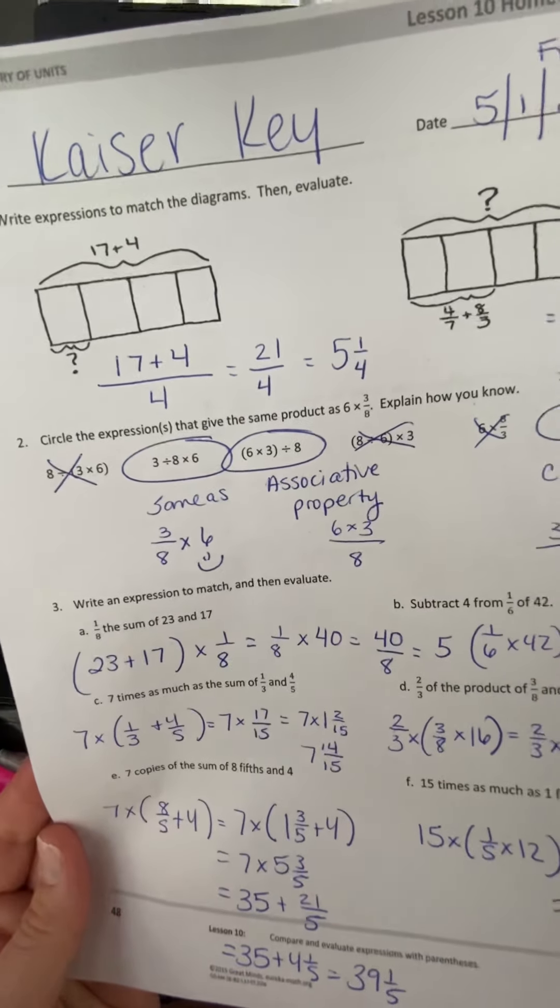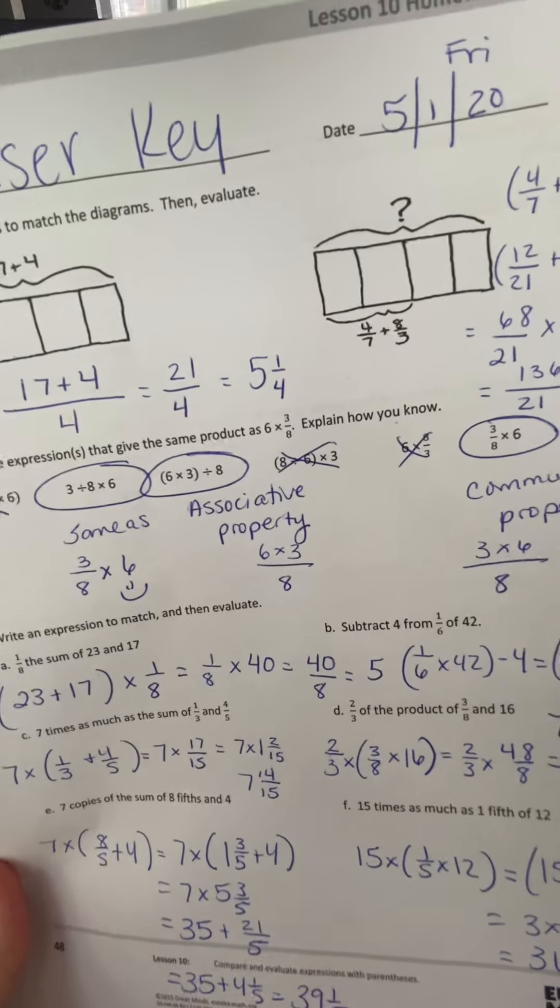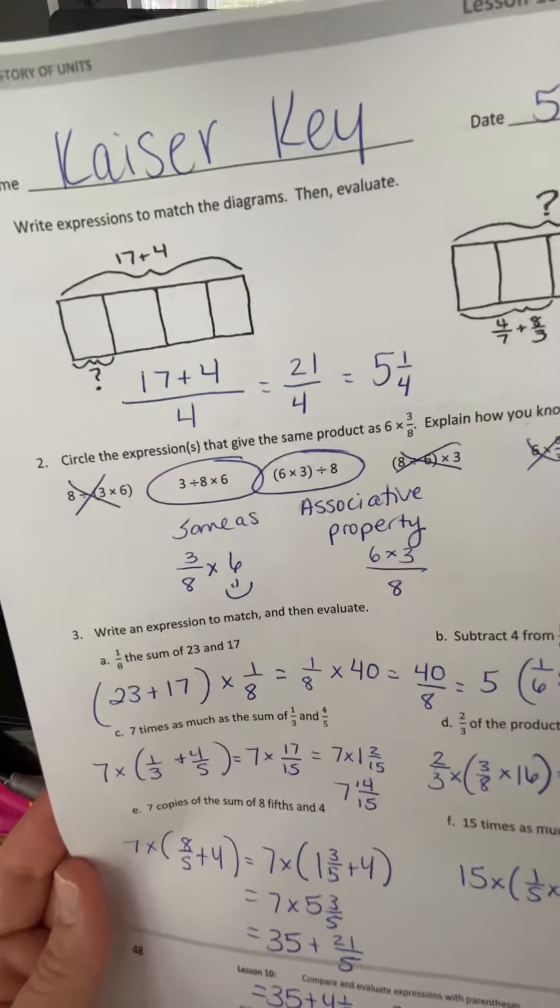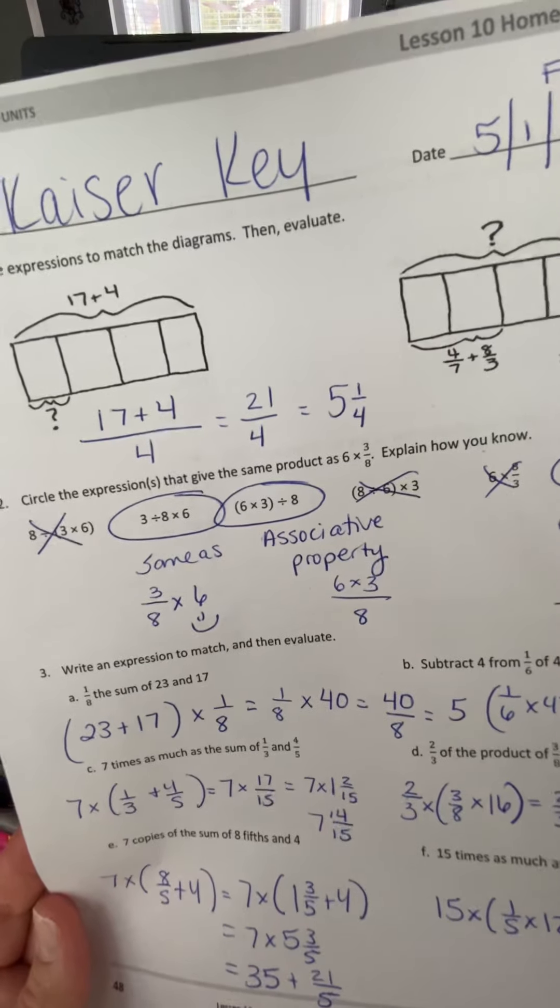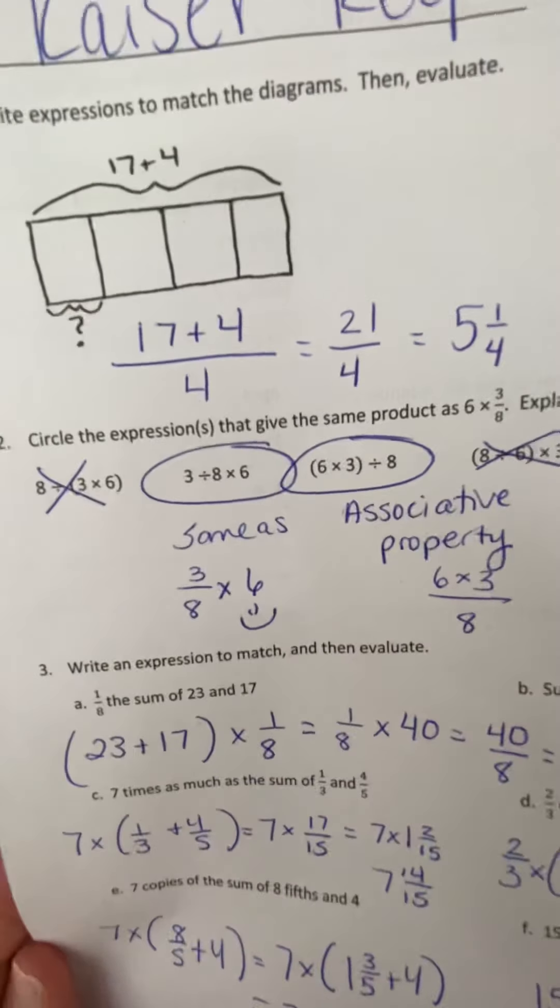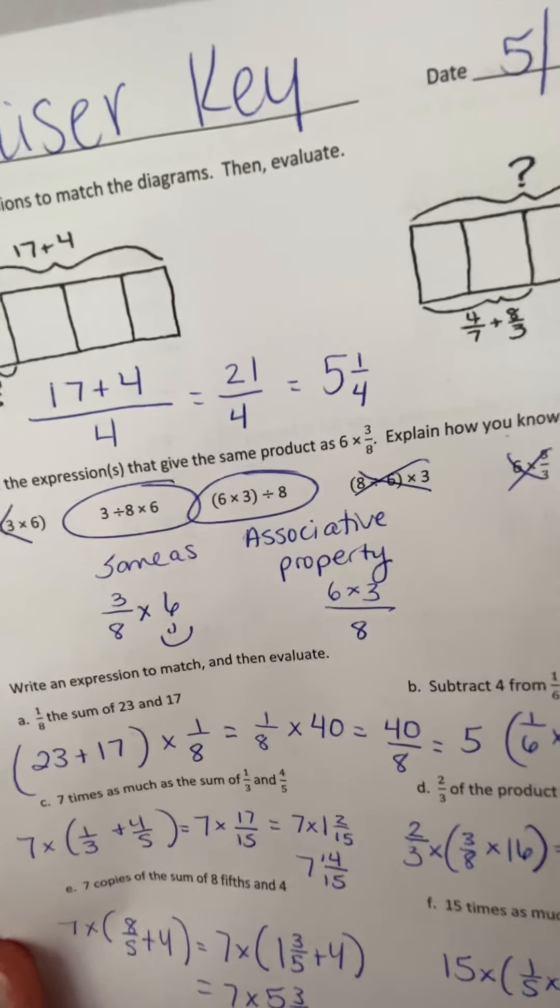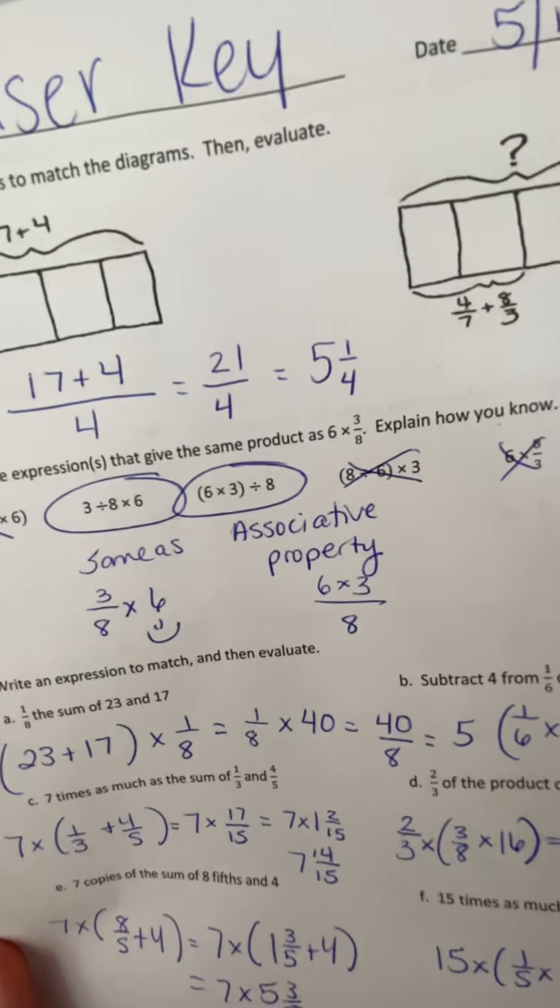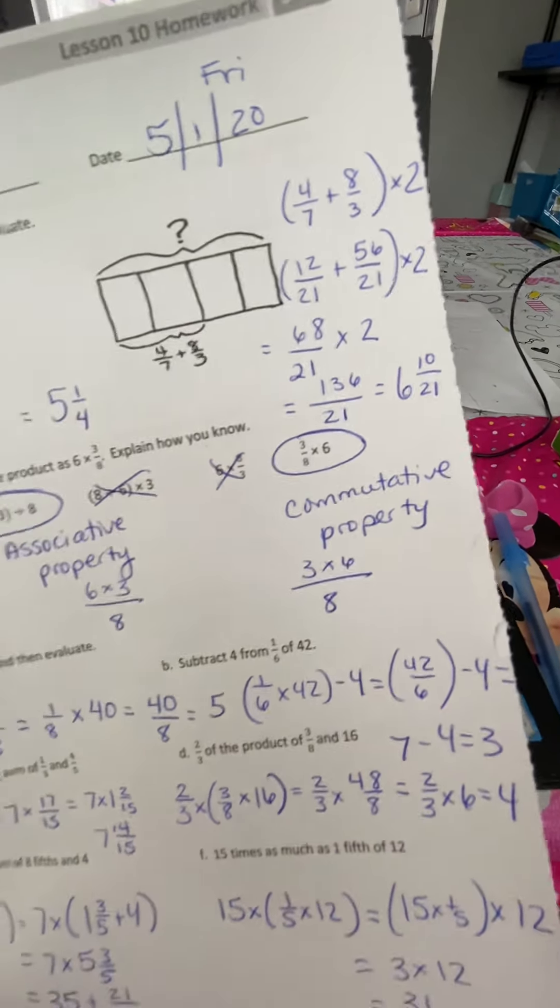Number two, circle the expression or expressions that give the same product as 6 times 3 eighths. And how do you know? 6 times 3 eighths is the same thing as taking 3 divided by 8 and multiplying it by 6. That's pretty much the same equation. 6 times 3 in parentheses divided by 8 is the associative property, so that is also the same. And finally, 3 times 8 divided by 6 is the commutative property, meaning you can multiply in any order and the answer is still the same.